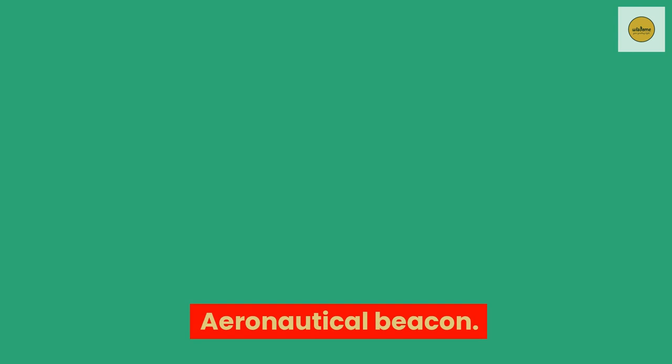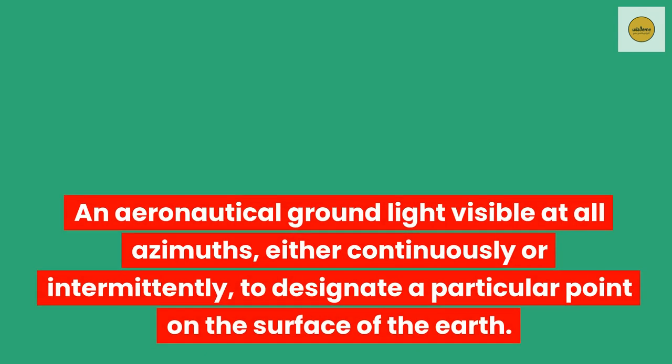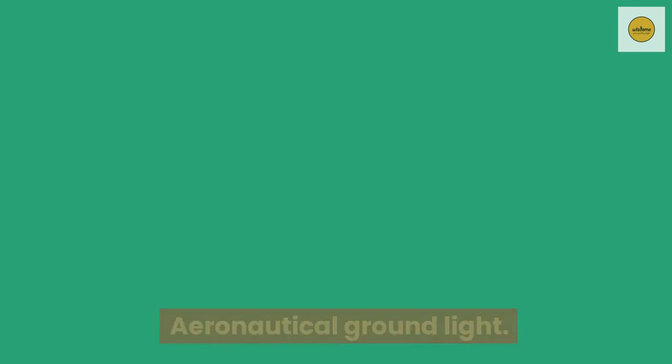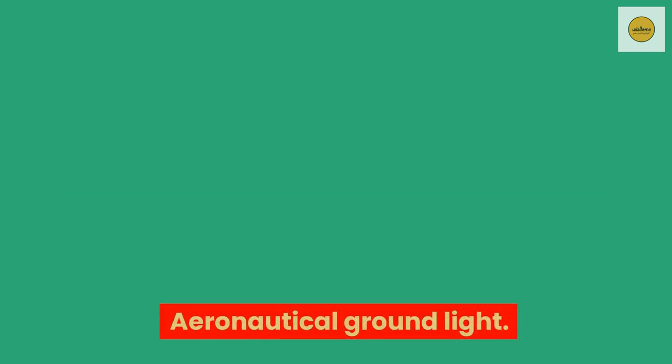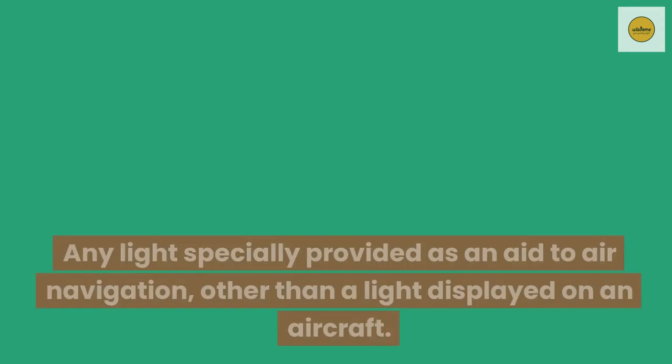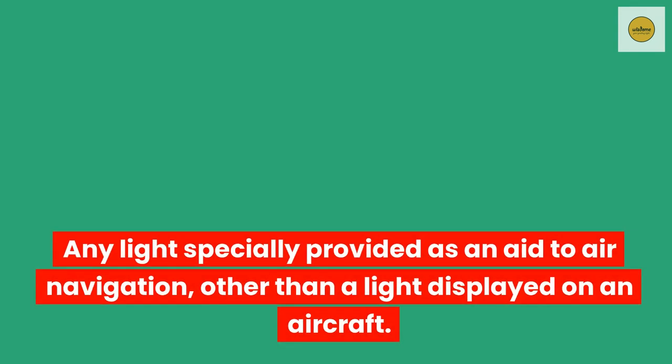Aeronautical beacon. An aeronautical ground light visible at all azimuths, either continuously or intermittently, to designate a particular point on the surface of the earth. Aeronautical ground light. Any light specially provided as an aid to air navigation, other than a light displayed on an aircraft.